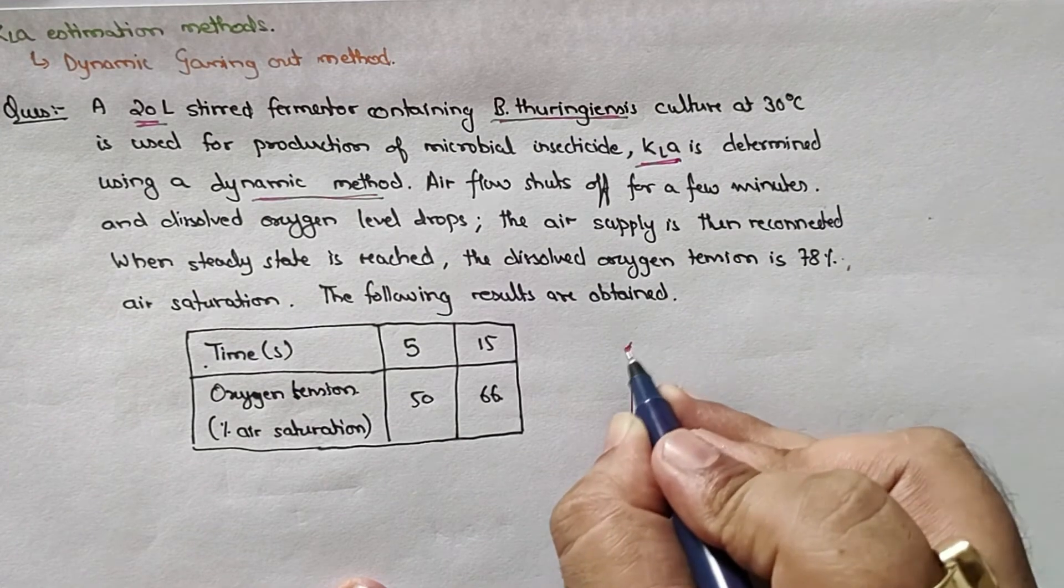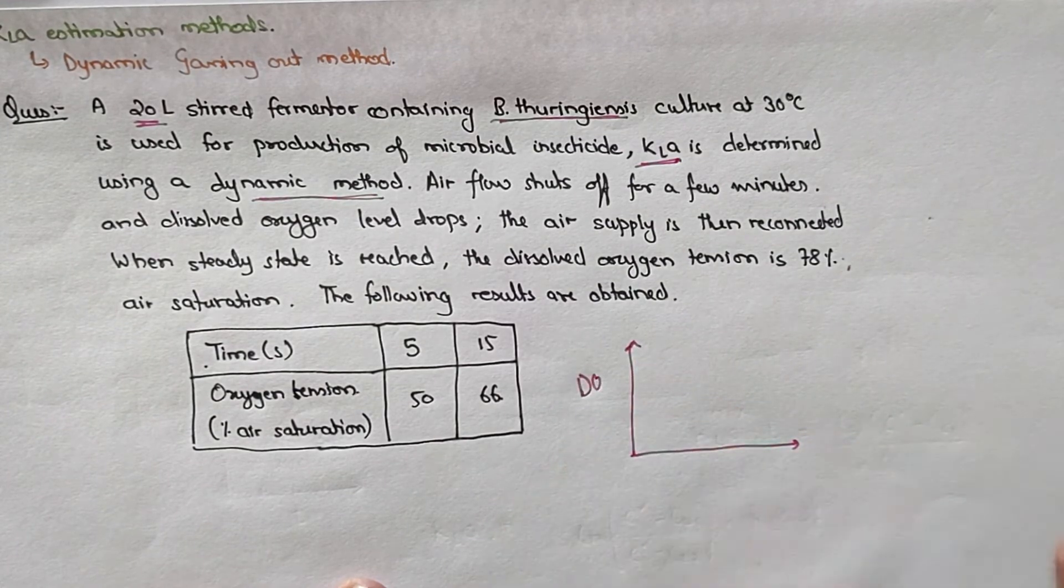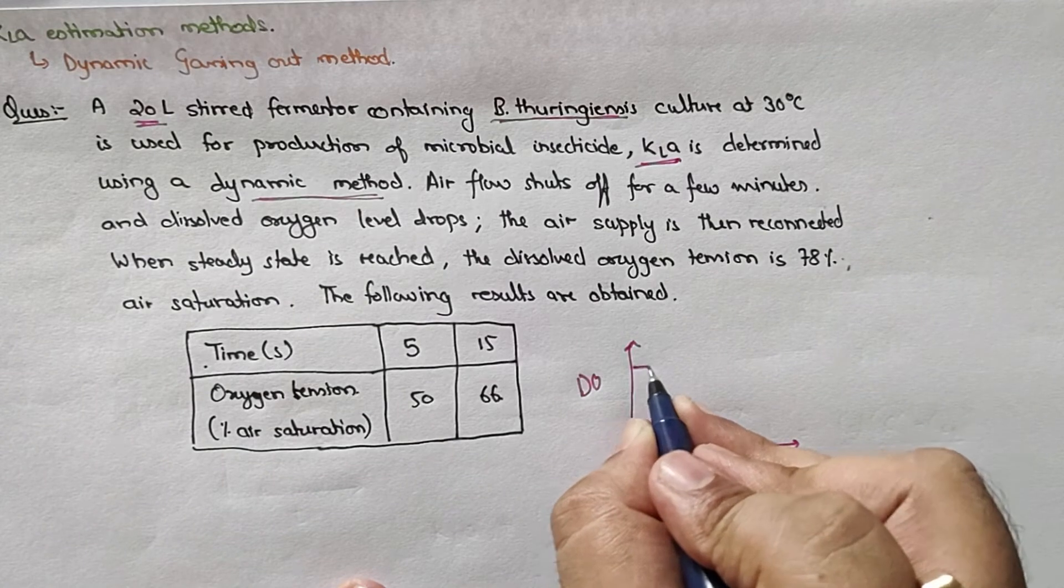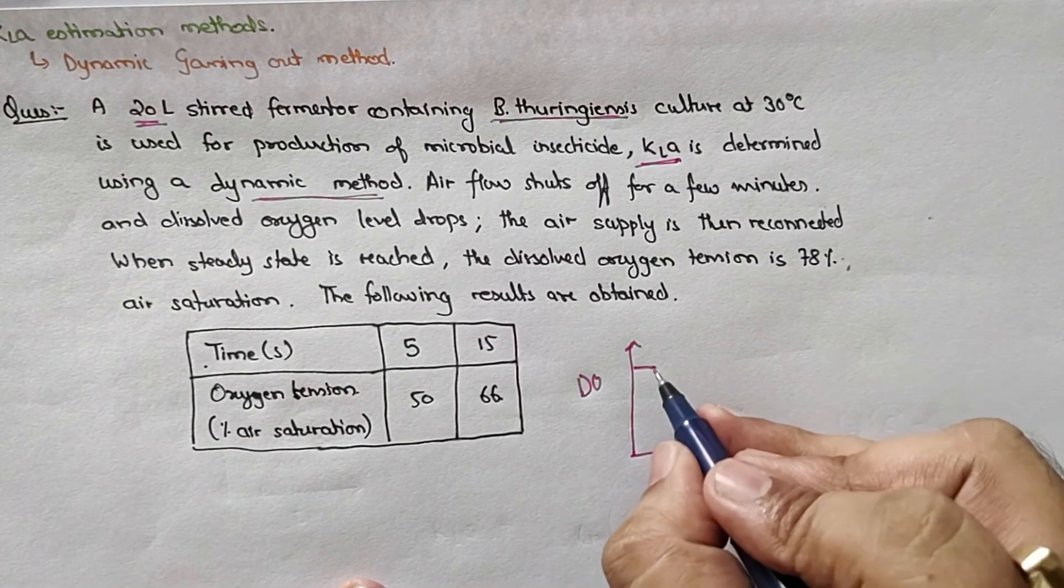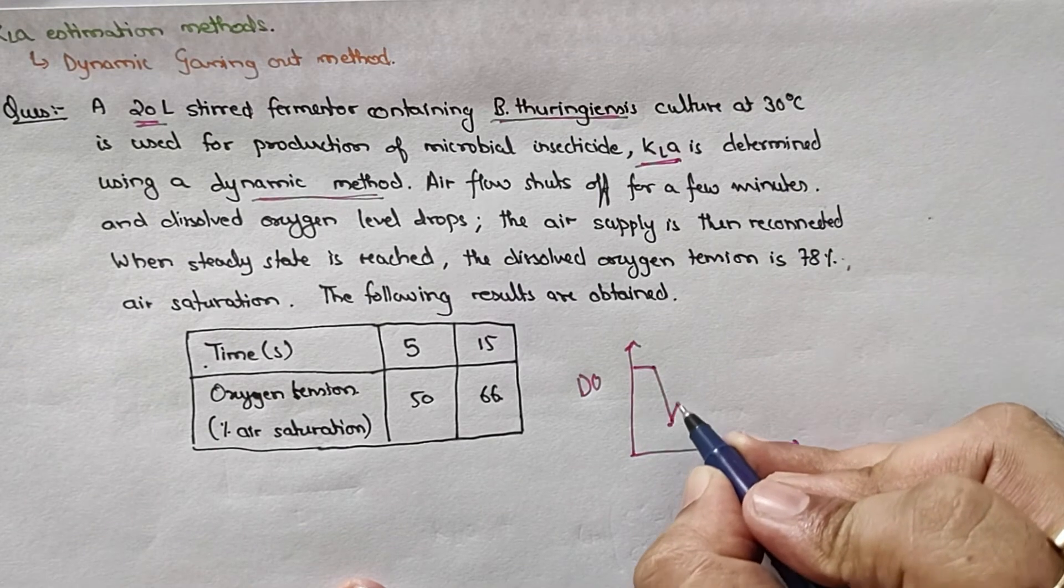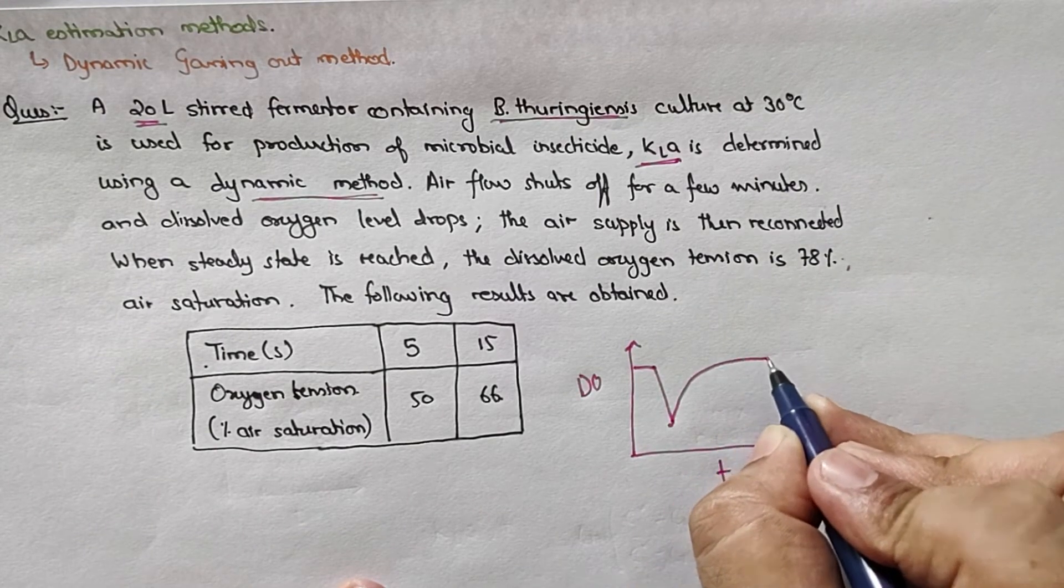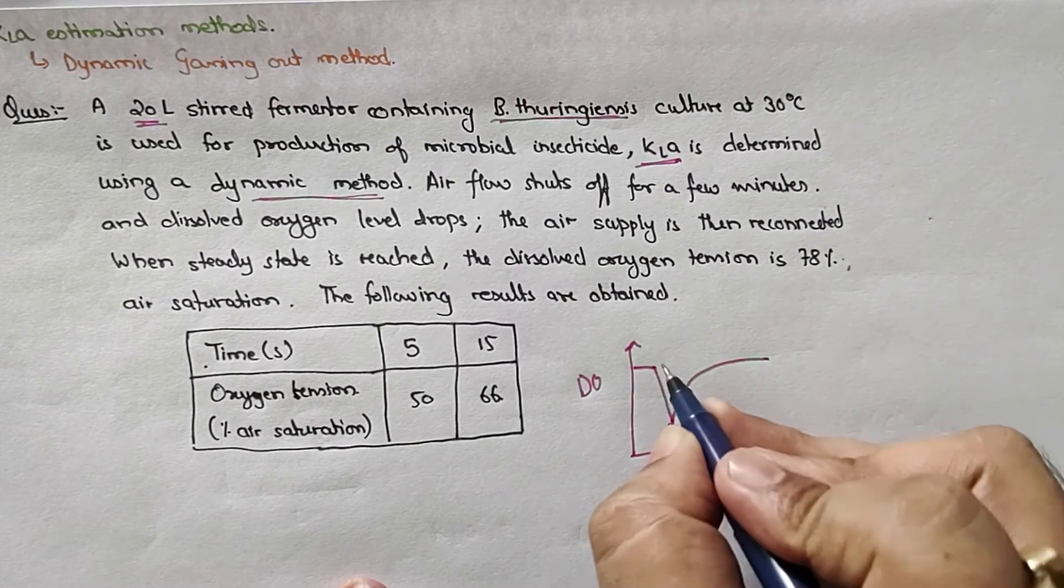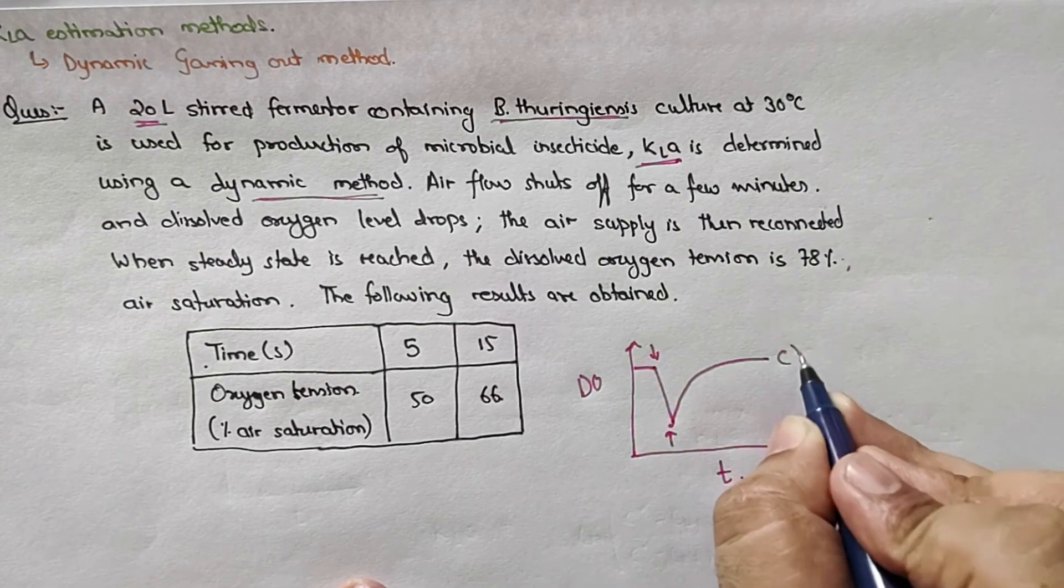If we plot DO versus time like this, initially there was a steady state, then the oxygen was cut off. Then DO level starts increasing in the fermentation media until it reaches the saturation point C*.